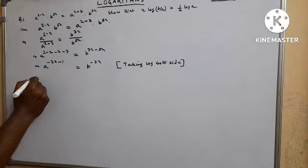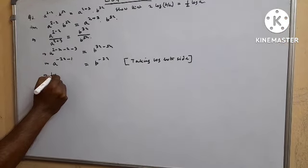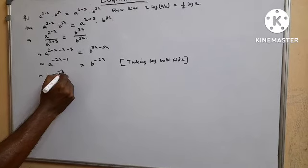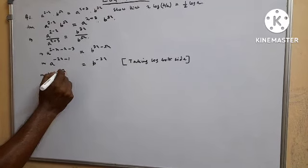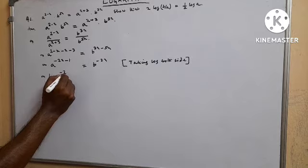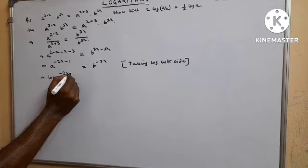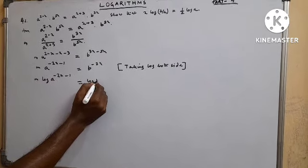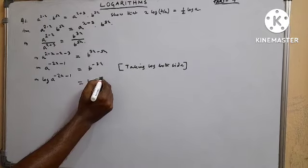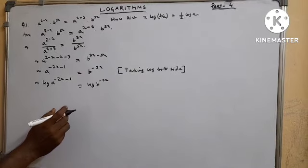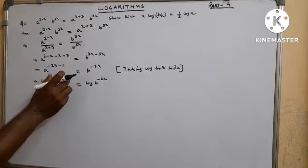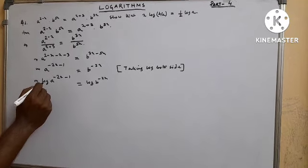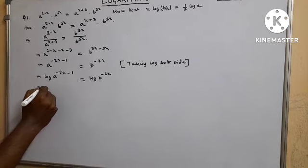Taking log on both sides: log of a^(−2x−1) equals log of b^(−2x). In the case of log, the power becomes the coefficient of log.